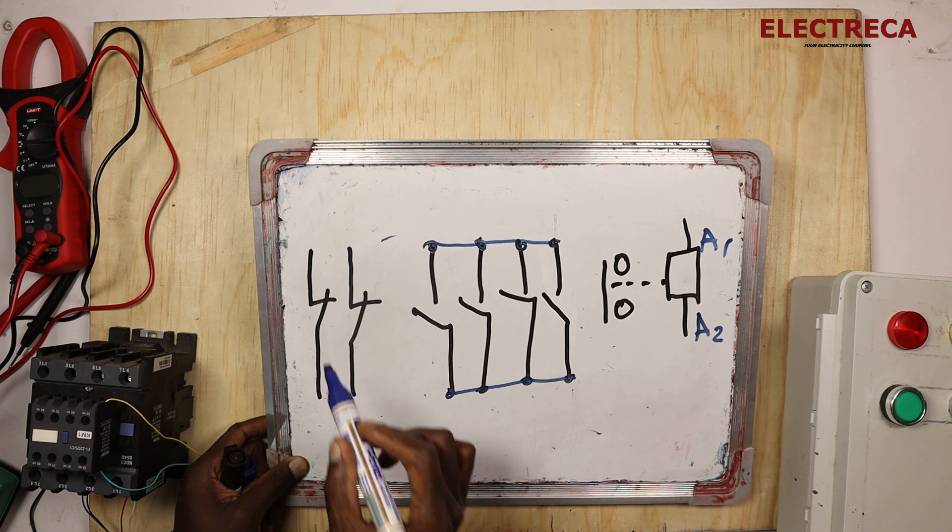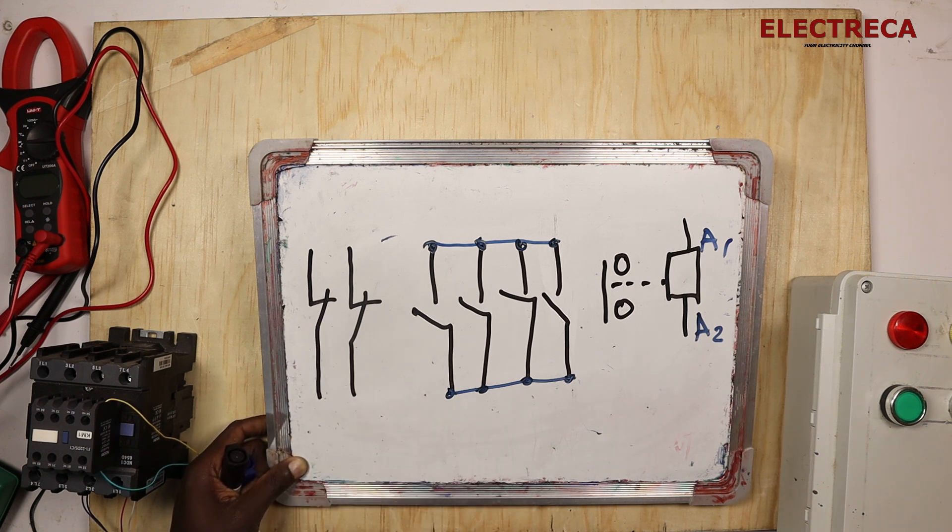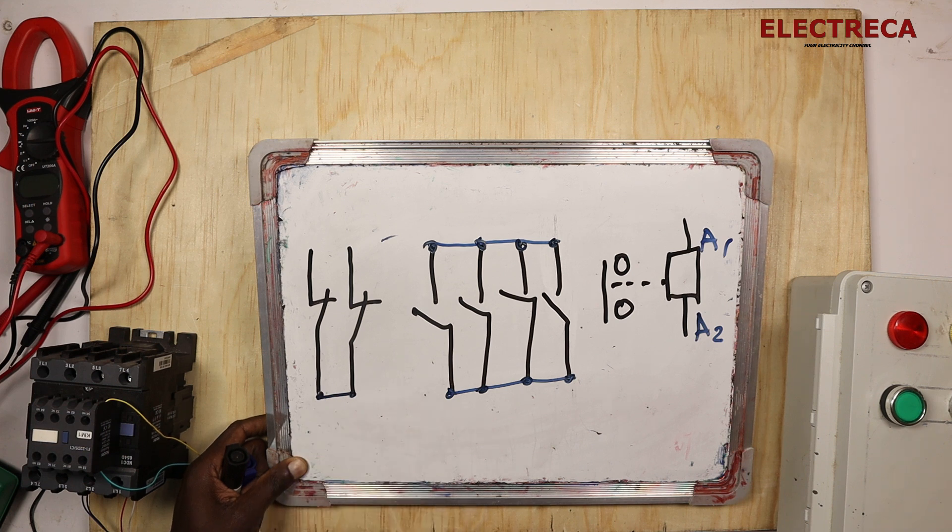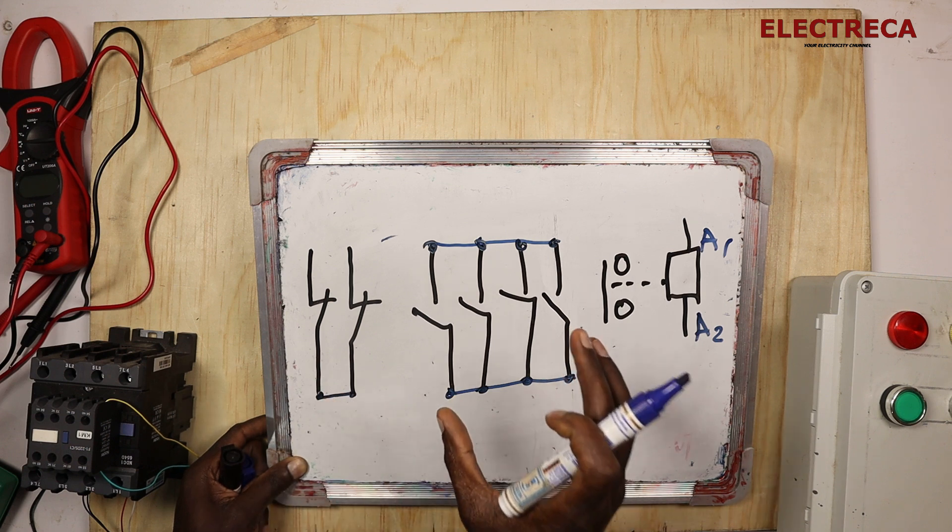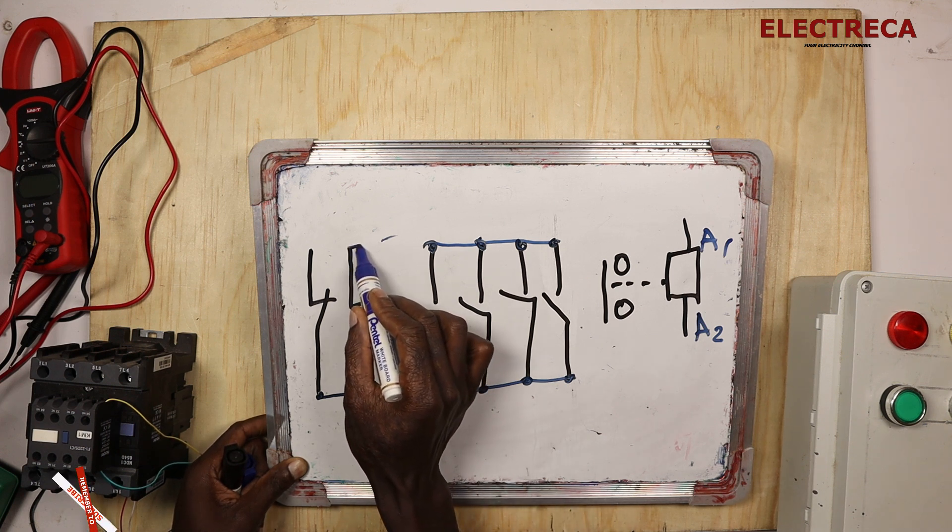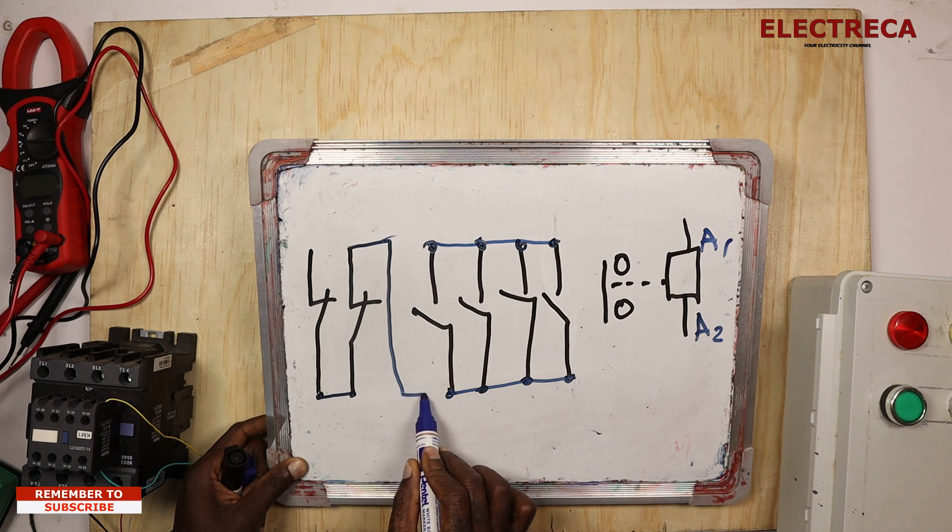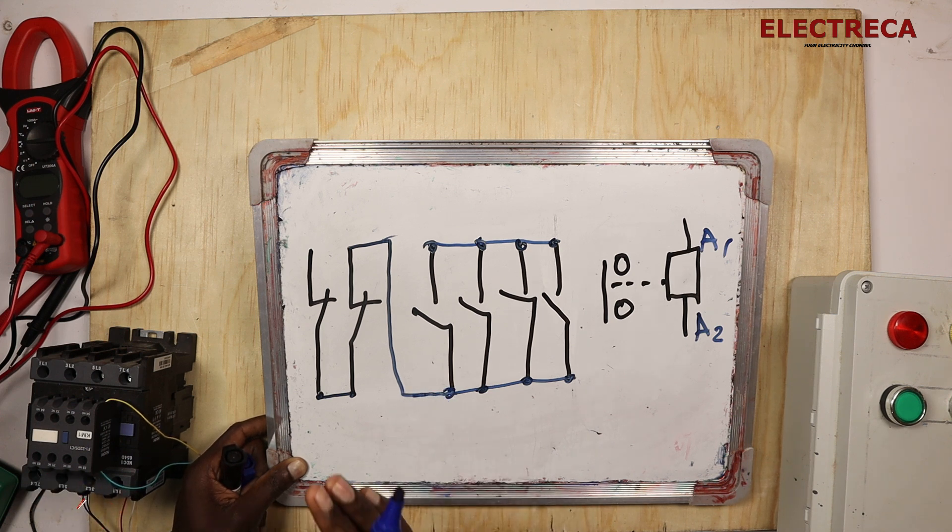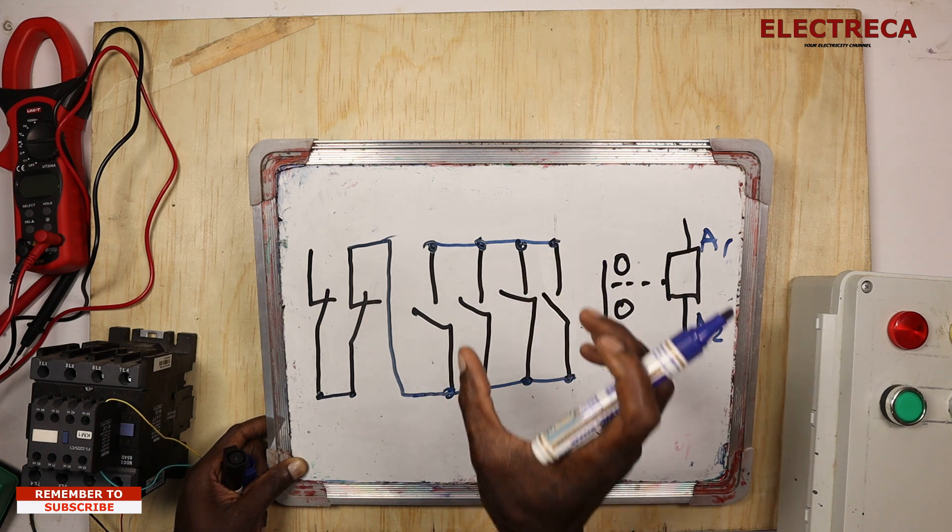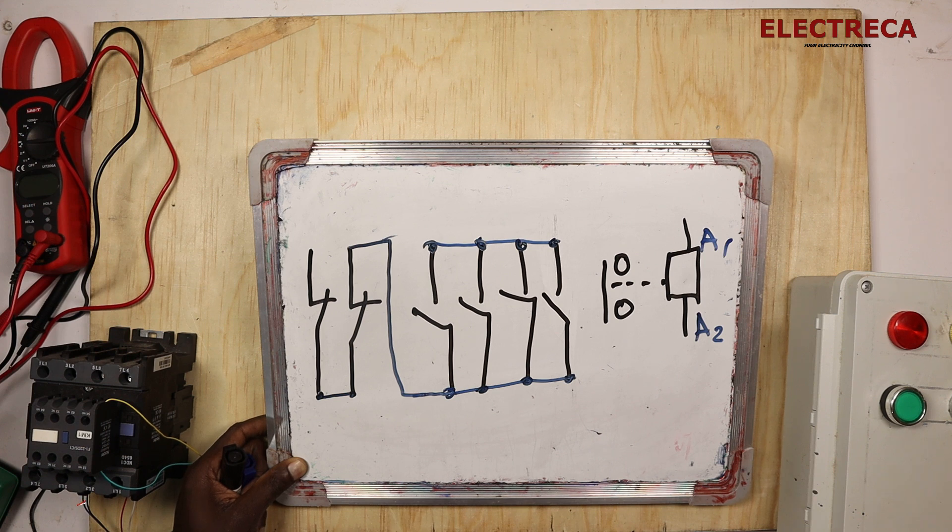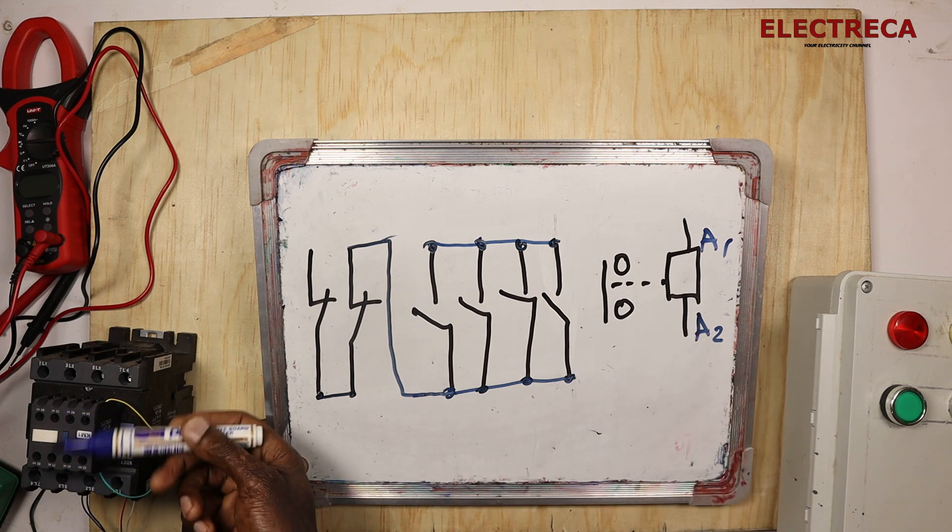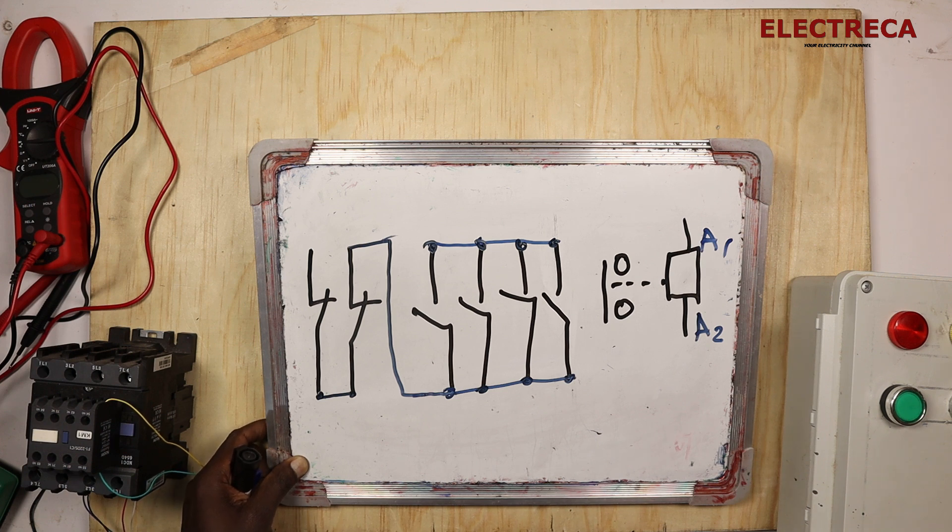Now the stop buttons we connect in series. So stop series, start parallel. Now let us connect this together. So like that, the stop button is in series with the start button. The four start buttons are connected in parallel, the two stop buttons are connected in series. Now we have our normally open here on the contactor which will help us to do the retaining or the holding position.